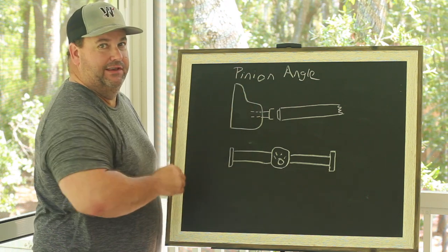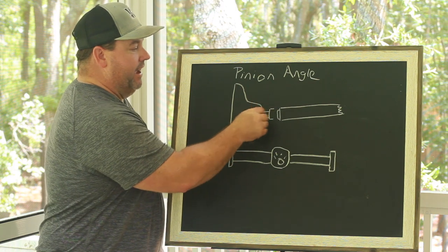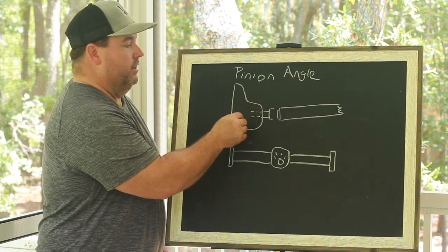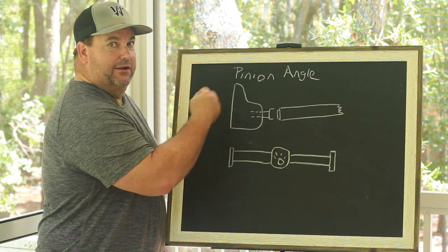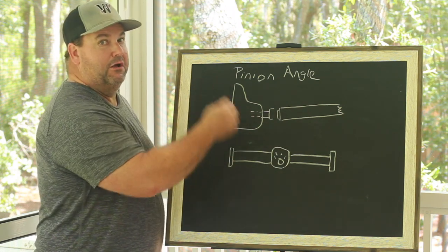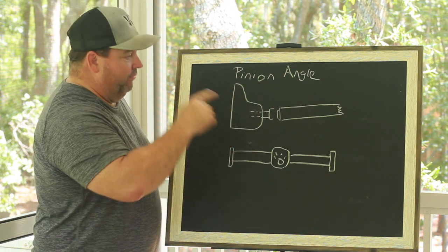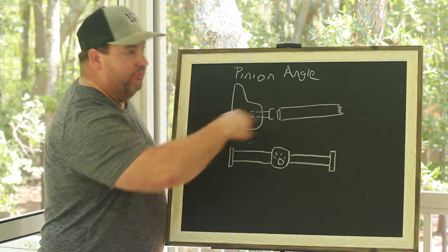Pinion angle is the relationship of your pinion, so imagine this is a center section. Please imagine with me this is a center section and this is your pinion shaft. Of course, the pinion gear turns, and on my vehicles, my pinion gear turns clockwise when you're staring at it from the front to rotate the car, to rotate the tires forward.